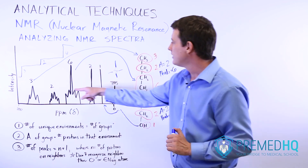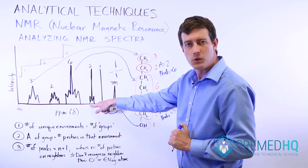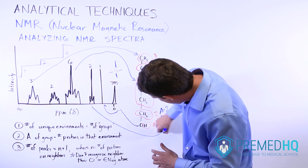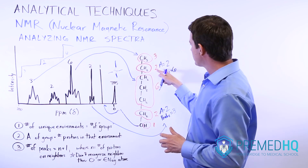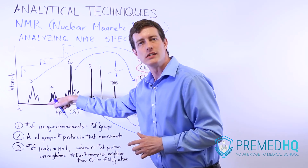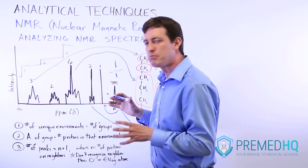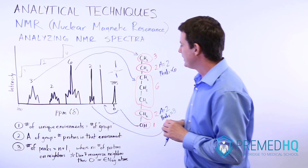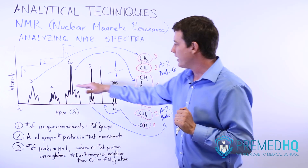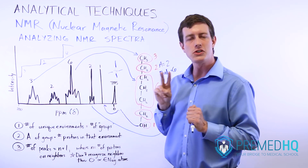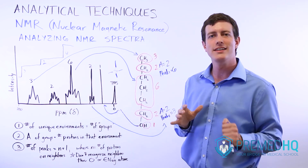So assigning these two groups: one has three peaks and area two, corresponding to the CH2 adjacent to oxygen. The other has area two and six peaks within the group — they might call it a multiplet. The area of two tells us there are only two protons in that environment, and the six peaks tells us N plus one equals six, so N equals five neighboring protons.